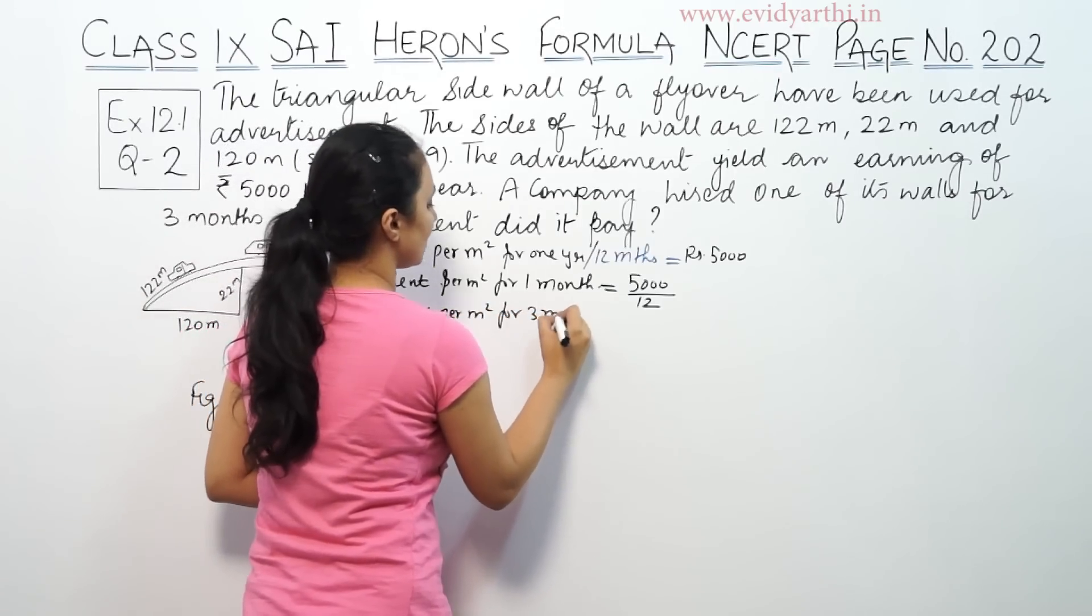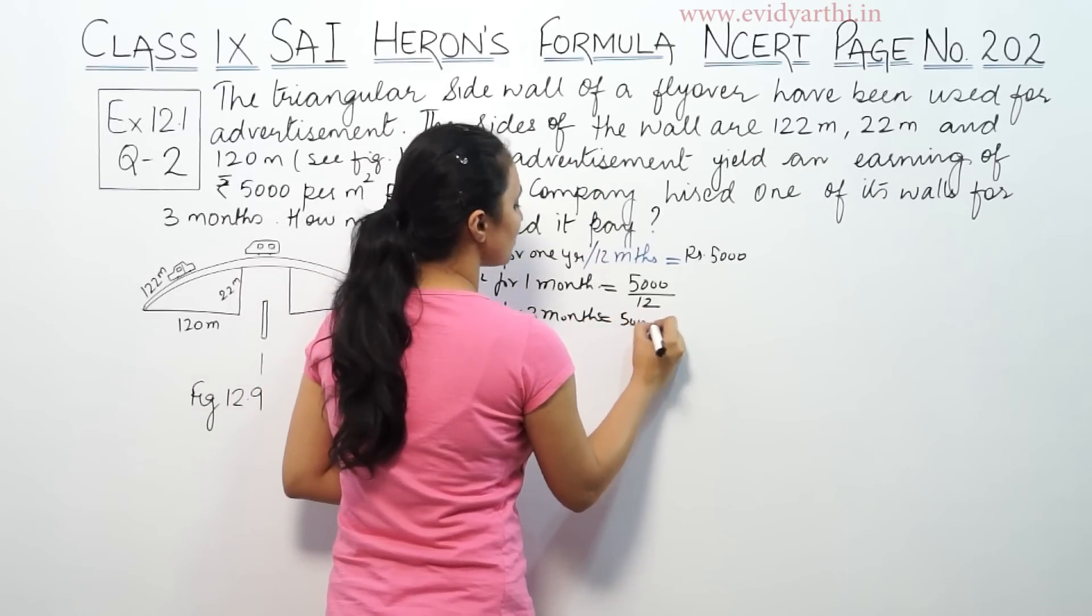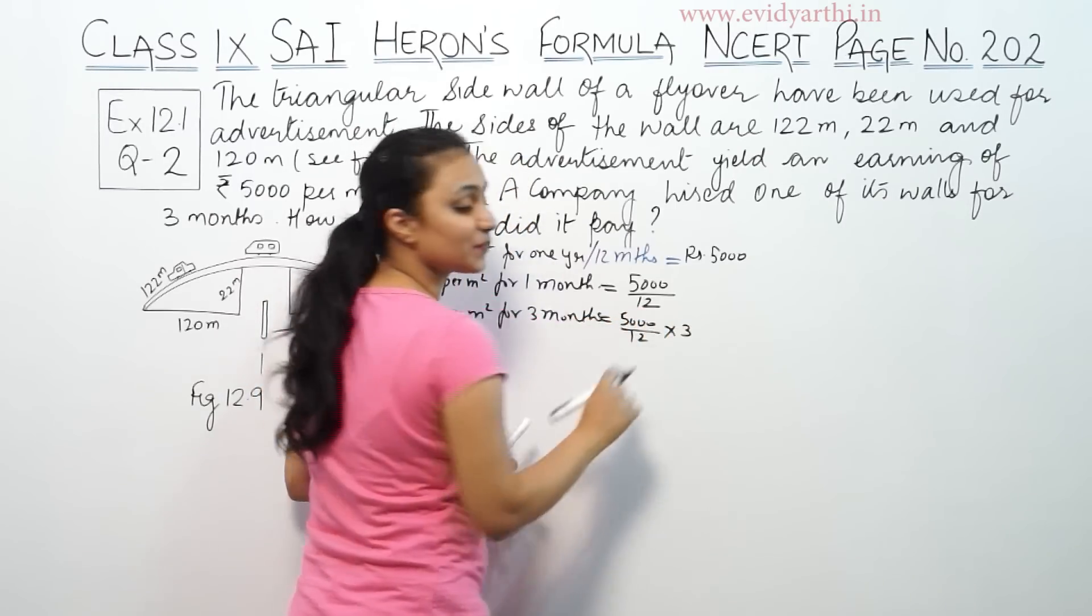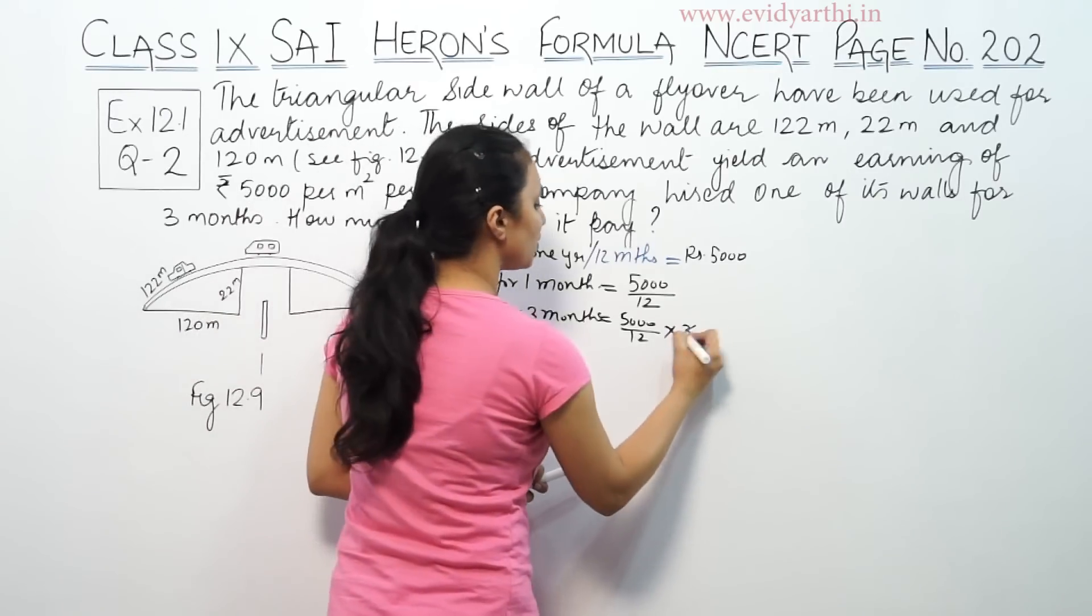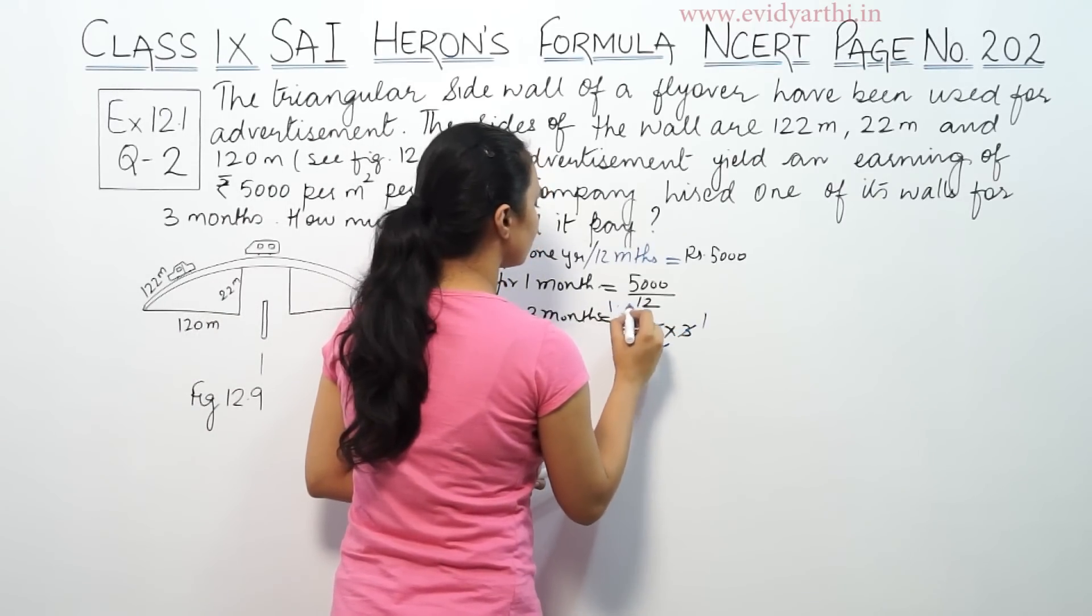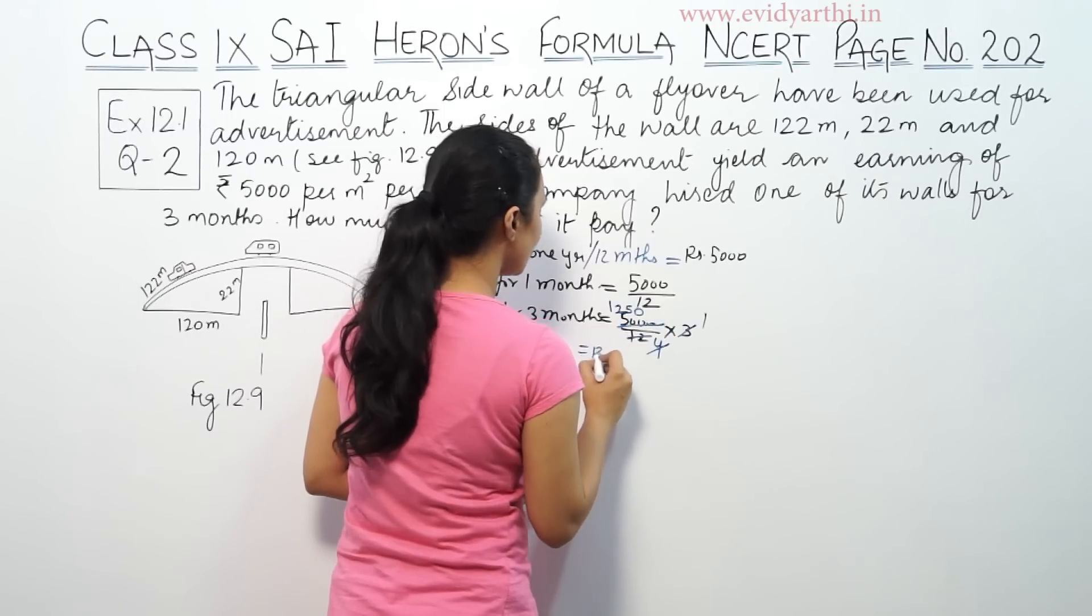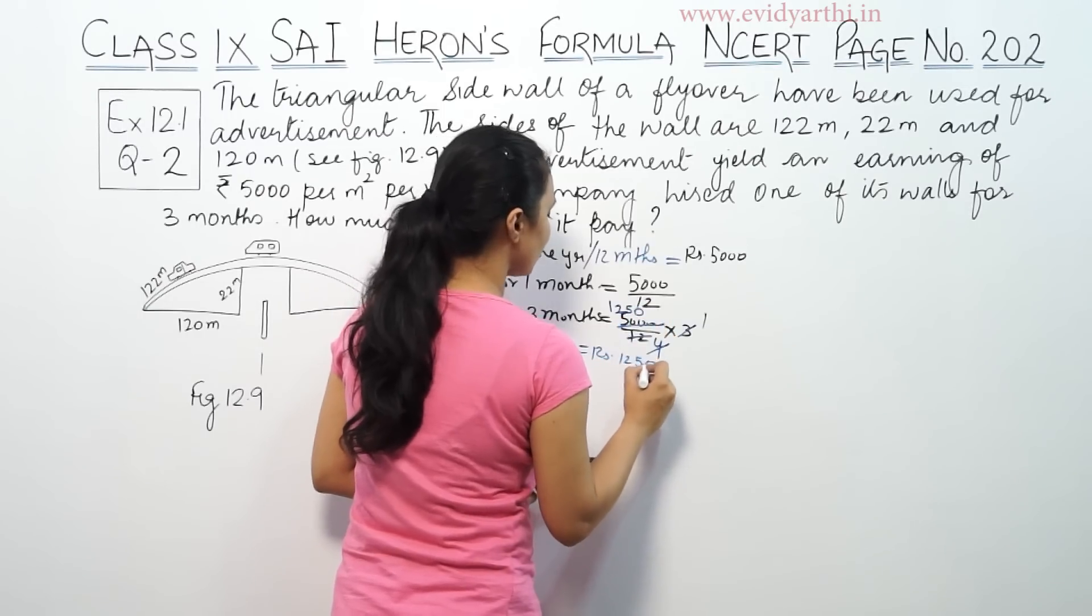For three months, the rate per meter square will be 5000 by 12, so if you want to work it out, it's 1250.